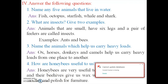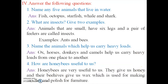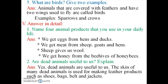Fifth question — what are birds? Give two examples. Answer: animals that are covered with feathers and have two wings used to fly are called birds. Examples: sparrows and crows. S-P-A-R-R-O-W-S, sparrows. C-R-O-W-S, crows.